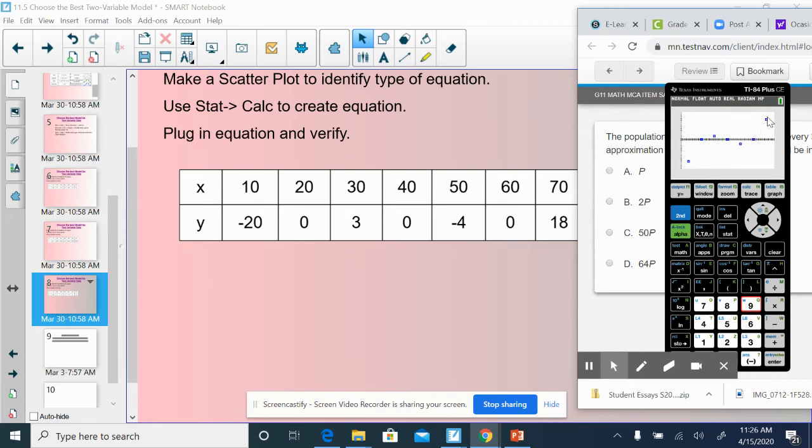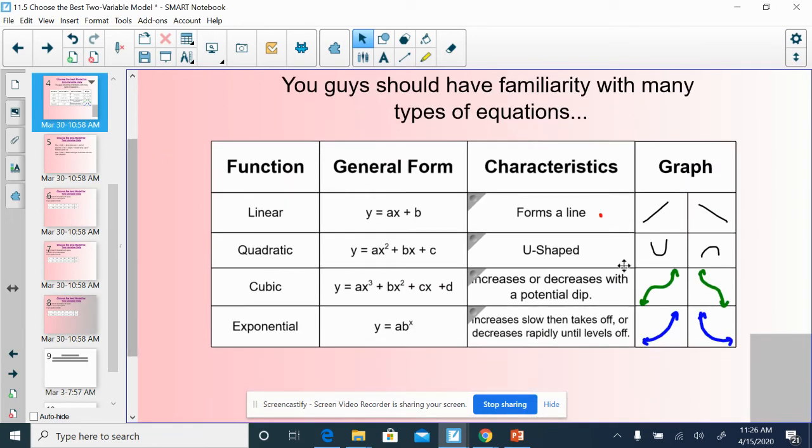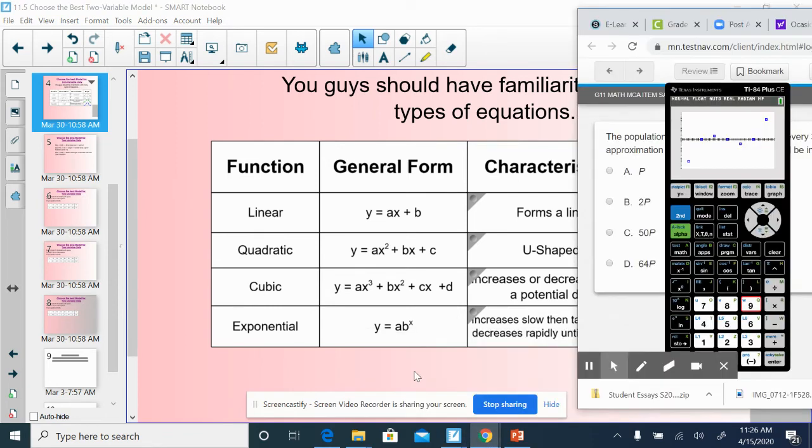And I will graph my data set right here. So there I have it. I should be able to say, okay, when I look back at those different types that we talked about, which one of these graphs does it look like? Well, that would be a cubic graph. So this is cubic.